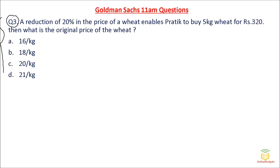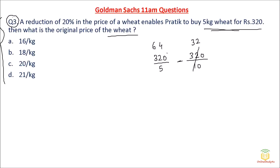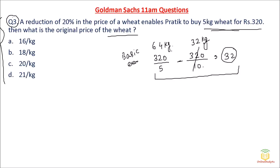Now question number 3. A reduction of 20% in the price of wheat enables Pratik to buy 5 kg extra wheat for Rs. 320. What is the original price of the wheat? First, understanding the question is very important. Suppose the price was Rs. 10 per kg — with Rs. 320 you get 32 kg. If the price is reduced to Rs. 5 per kg, you get 64 kg — that is 32 kg more. This is a basic example to understand the concept: when price is reduced, you get more quantity for the same money.